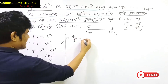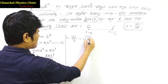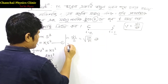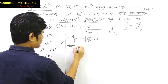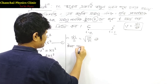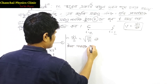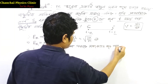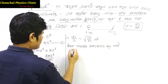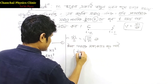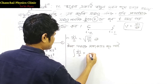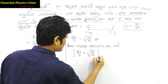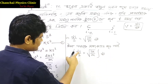ds/s-কে সমাকলন করলে বাম দিকে ∫ds/s, এবং ডান দিকে √(2k/m) · ∫dt. এখানে সমাকলনের সীমা হবে নির্দিষ্ট সীমার মধ্যে।